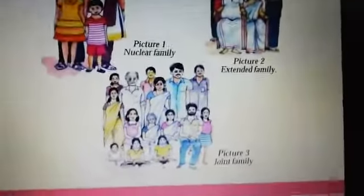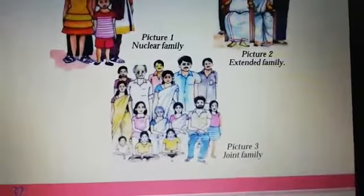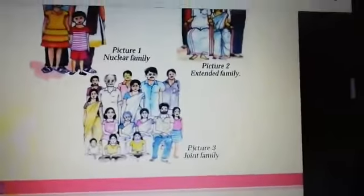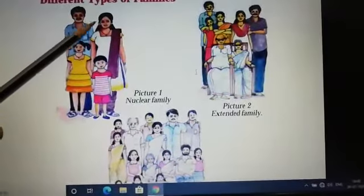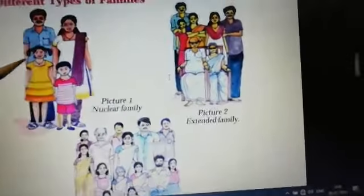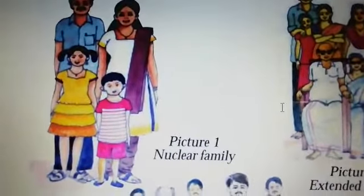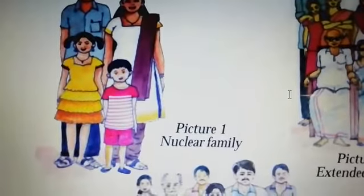What did you see? What differences can you notice from these families? In the first picture, there are only 4 members — Father, Mother and 2 children. Such families are called Nuclear Families. A Nuclear Family includes Father, Mother and their children. Nuclear Family means Anuguruma. In the first picture, you can see only Father, Mother and their children. This type of family is called a Nuclear Family.